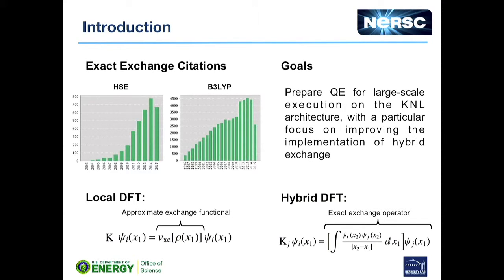This is a matter of increasing interest to the scientific community, but hybrid DFT calculations often remain prohibitively expensive. The primary difficulty is that when you do a hybrid DFT calculation, you have to perform lots of integrals in order to calculate the exact exchange potential. This is a set of integrals that is doubly indexed over the bands i and j, so you have to calculate a number of these that scales quadratically with the number of bands in the system. This is a very significant computational cost.